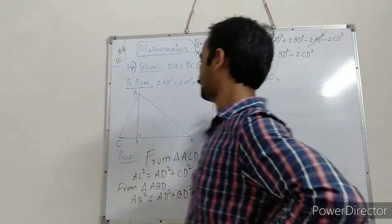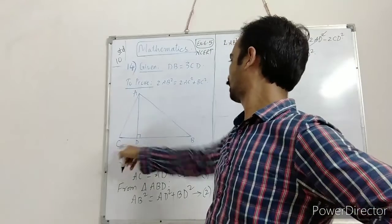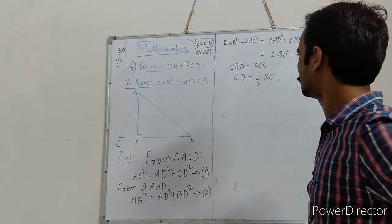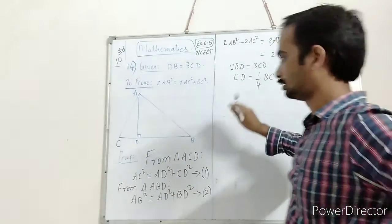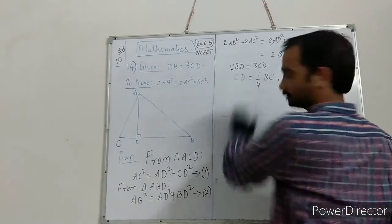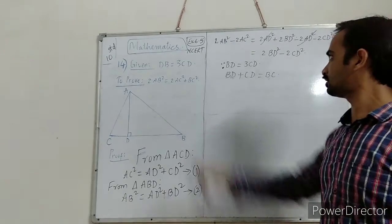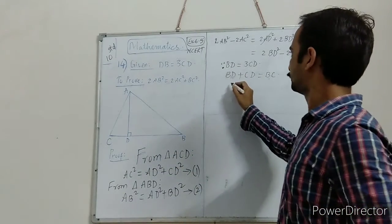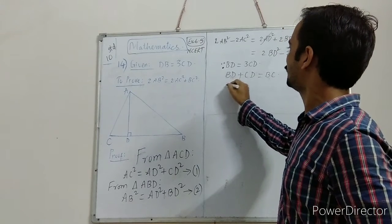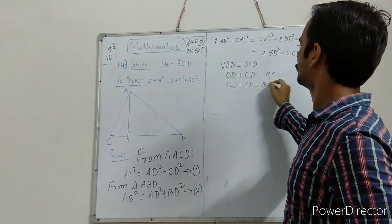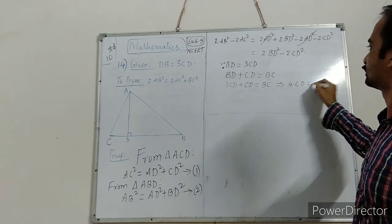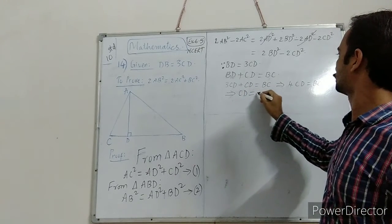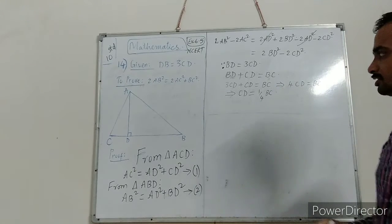Since bd is equal to 3cd, cd can be taken as one fourth of bc. We derived this because 3cd plus cd equals bc, so 4cd equals bc, and therefore cd equals one fourth of bc.